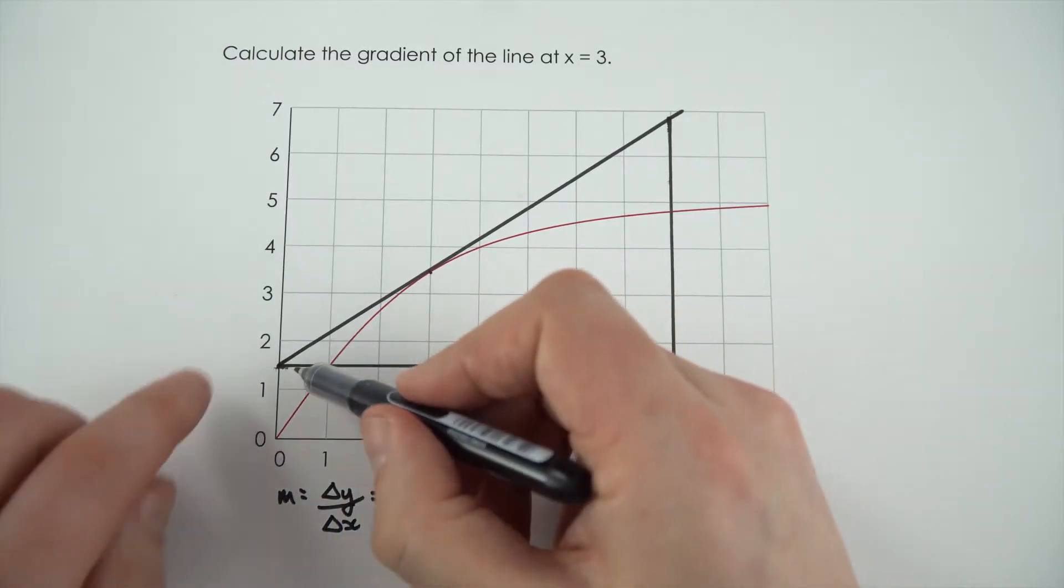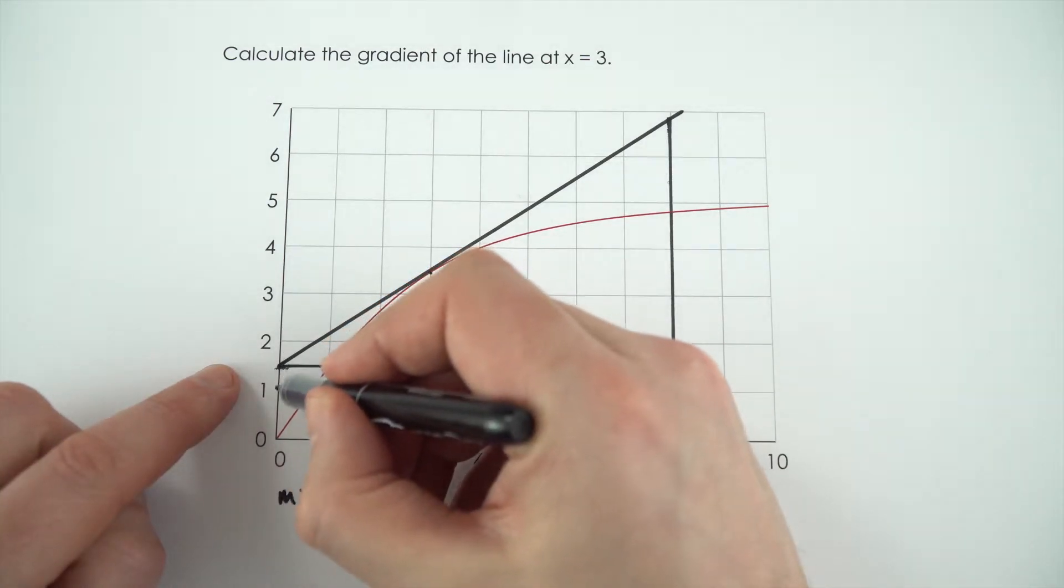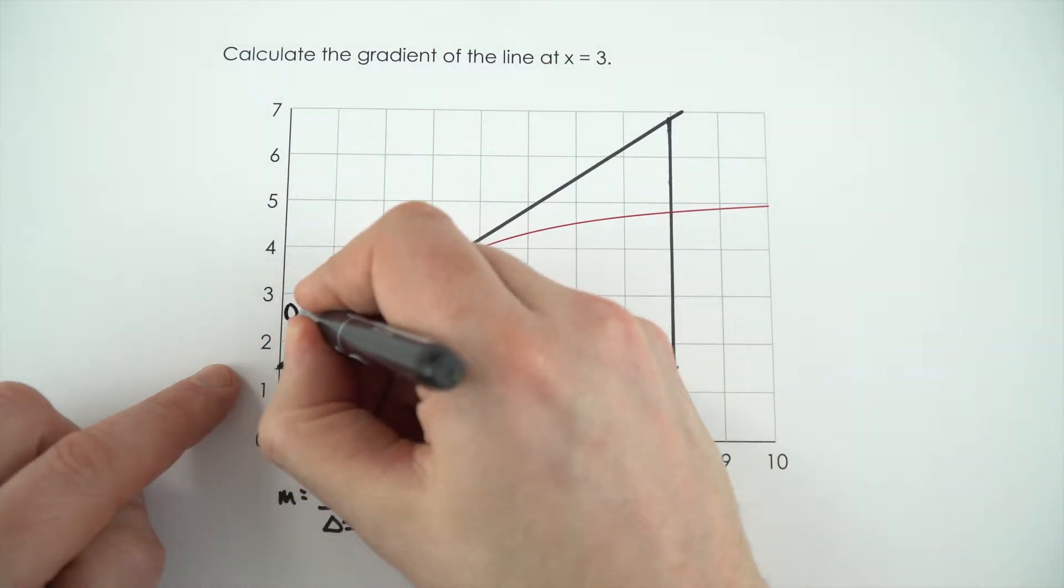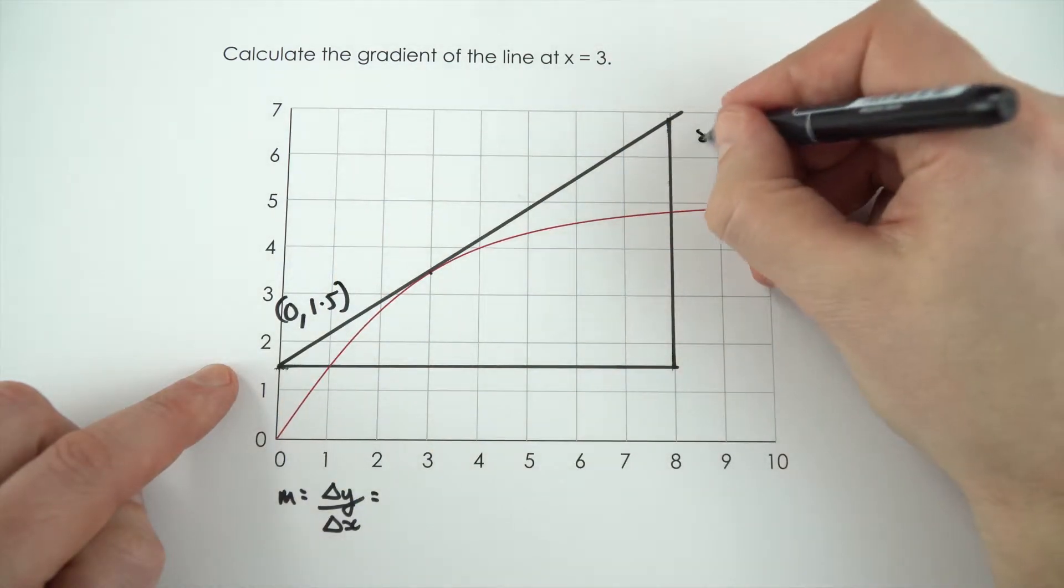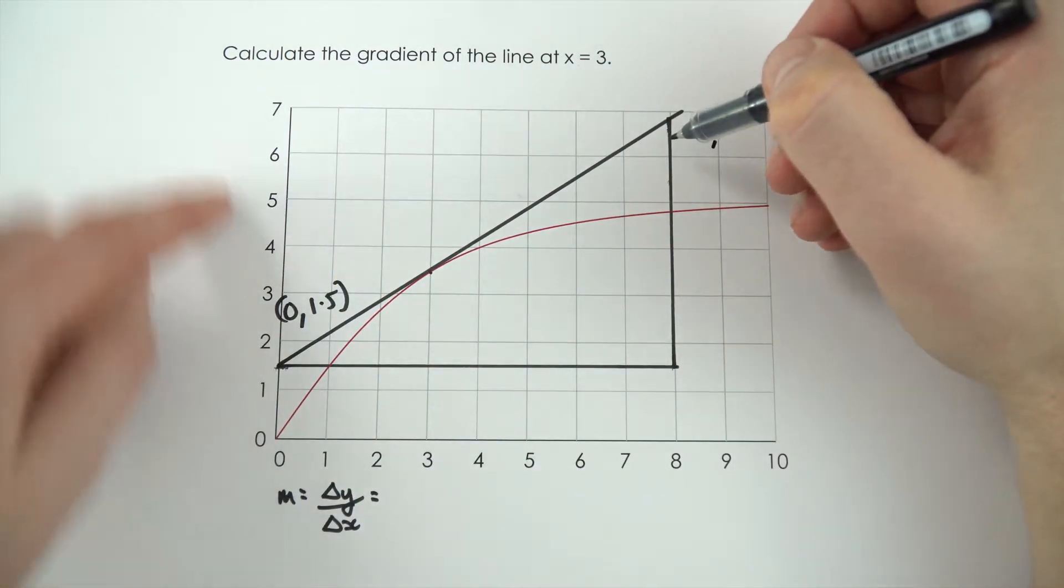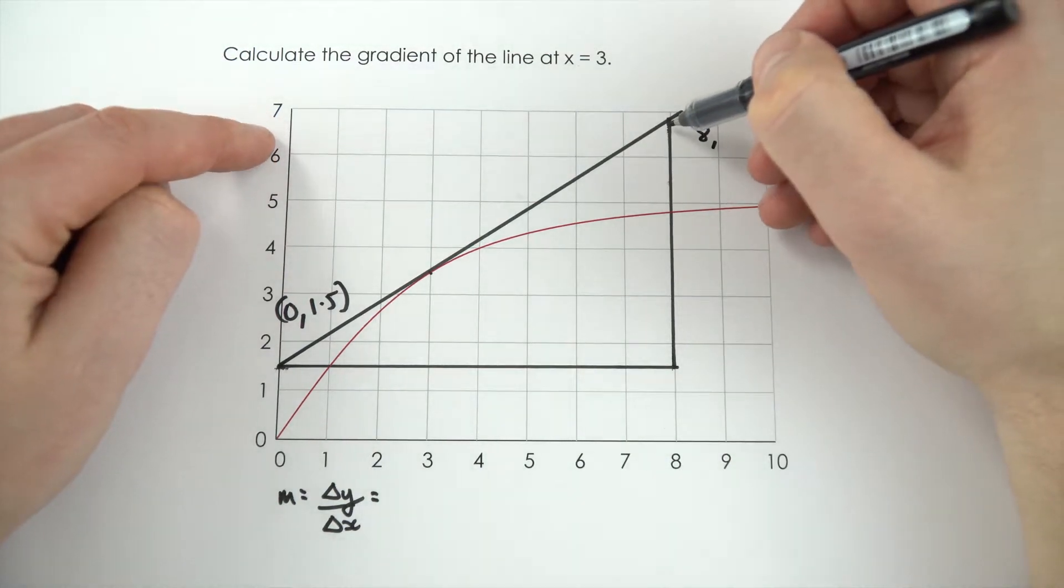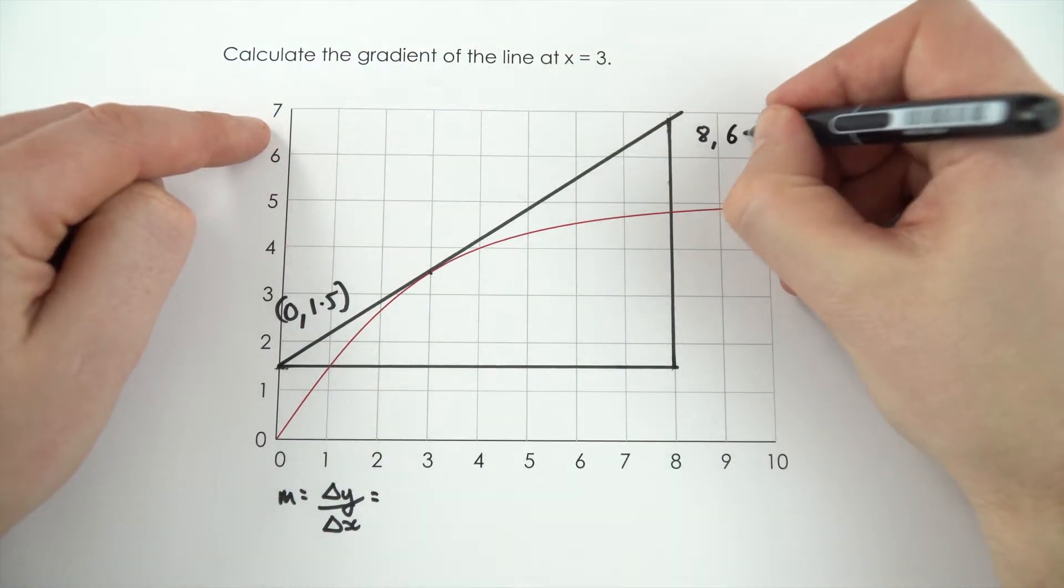So what values do we have? Well, I think this one here, at the start, that's midway between 1 and 2. So that's 0, 1.5. At the end up here, the x value is 8. And the y value, well it's somewhere between 6 and 7, and I think that's about 6.8.